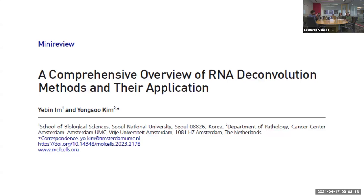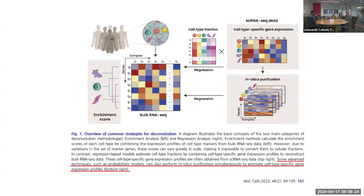I found an overview of RNA deconvolution methods and their applications. This figure gives the gist of the overview. What's shown in the bottom right of the figure — 'in silico purification' — is what they call advanced techniques, such as probabilistic models, usually Bayesian models, that can simultaneously estimate cell-type specific gene expression profiles from bulk data.